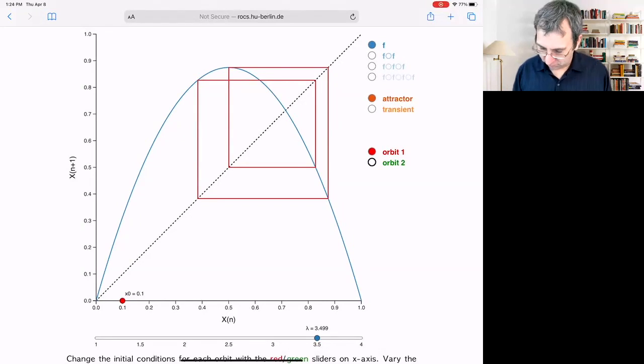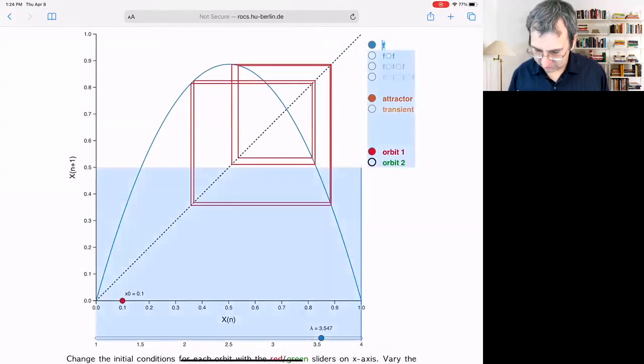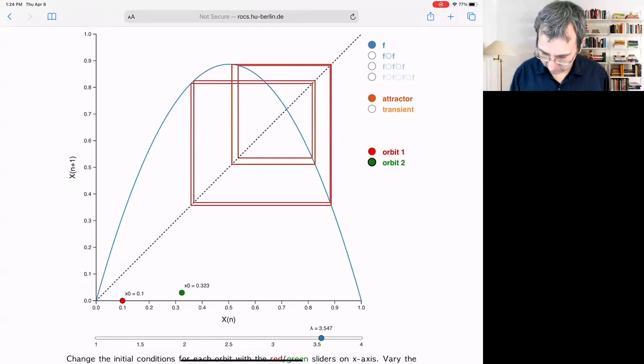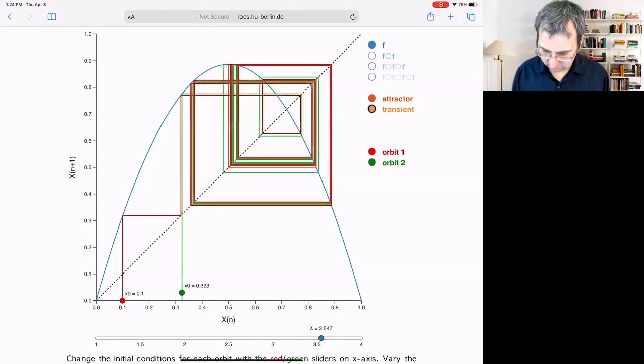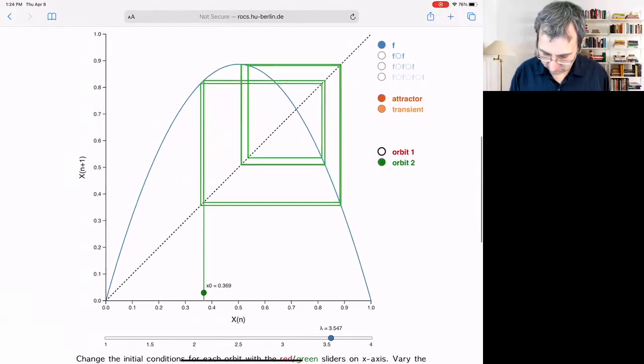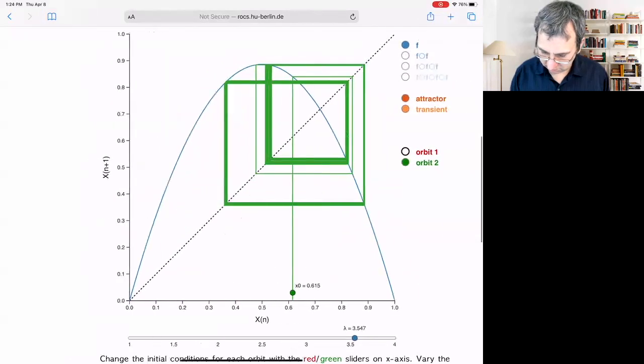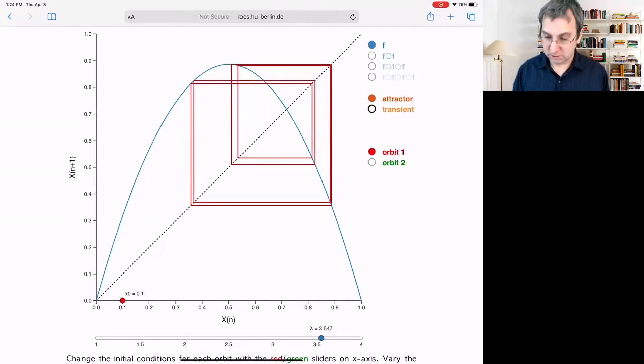And period four, it's really hard unless I really just slightly adjust this to see period eight. See what a period eight orbit looks like. Here it is, starting with any initial condition, how are things settling down to that from anywhere. If you get rid of the transient, that's the attractor. So this is period eight.